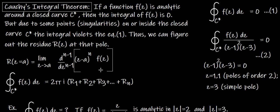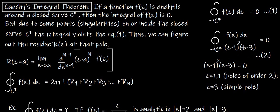I will show how to solve such questions with an example. The integral of f(z) dz along the contour or closed curve C* is equal to 2πi times the sum of residues at pole 1, pole 2, pole 3, and so on up to the nth pole.